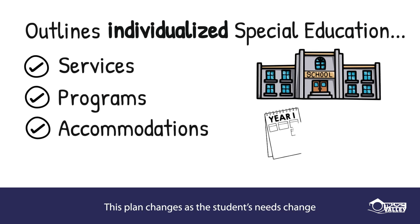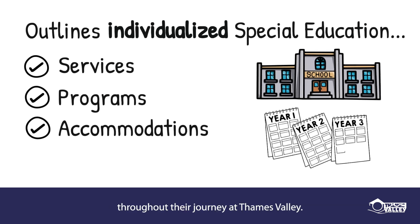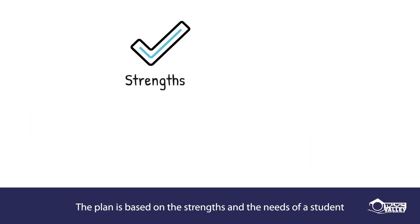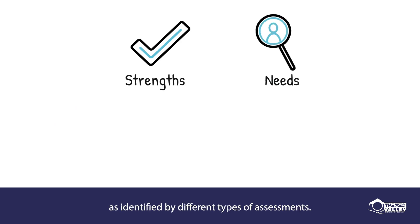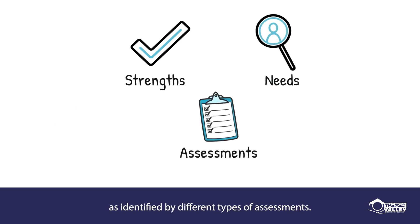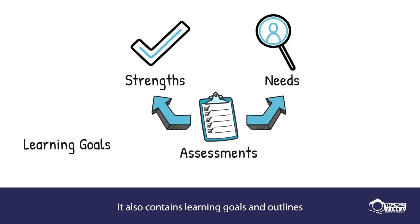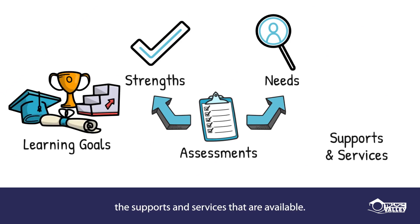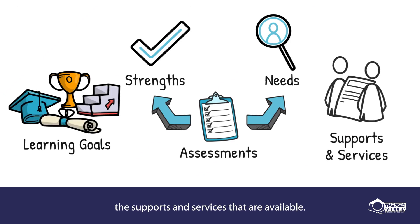The plan changes as a student's needs change throughout their journey here at Thames Valley. The plan is based on the strengths and the needs of a student as identified by different types of assessment. It also contains learning goals and outlines the supports and services that are available.